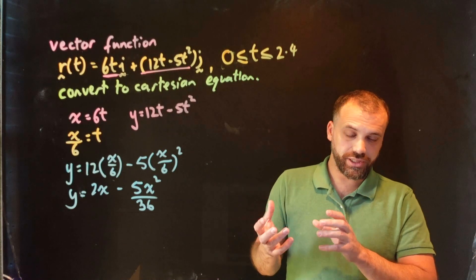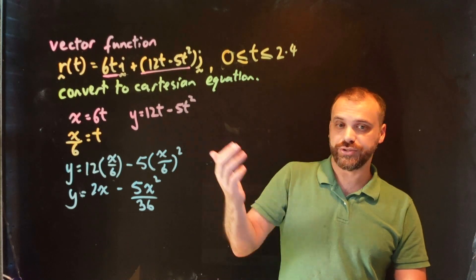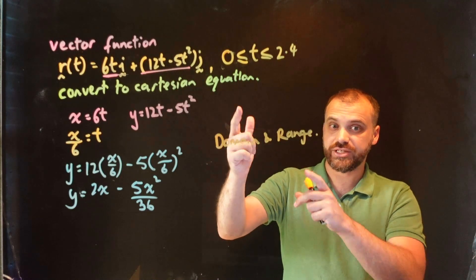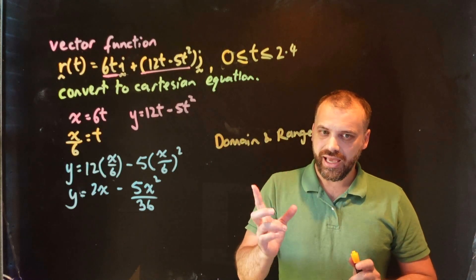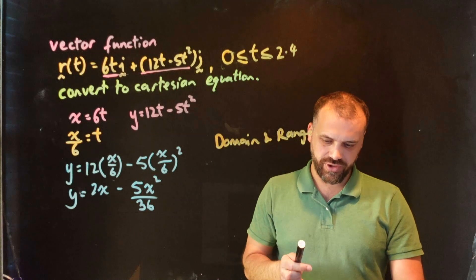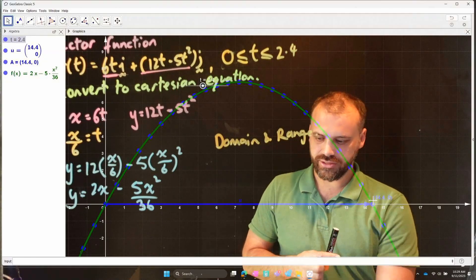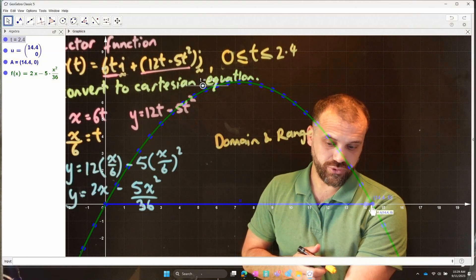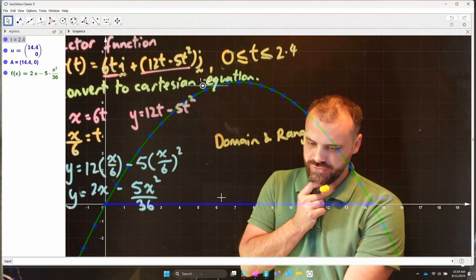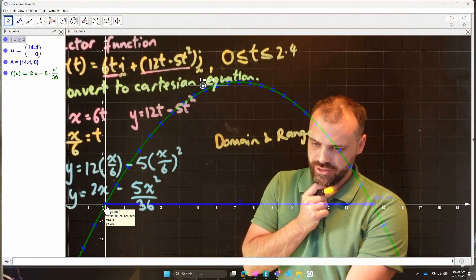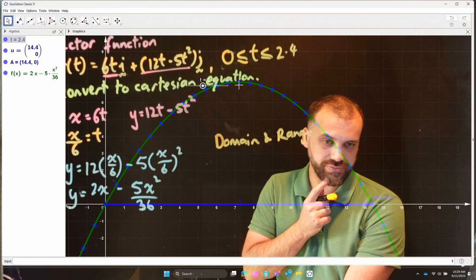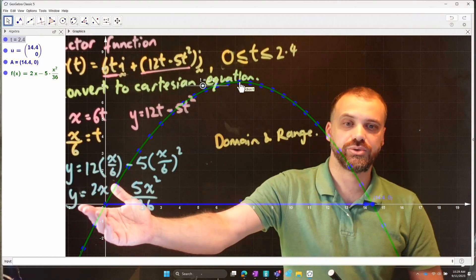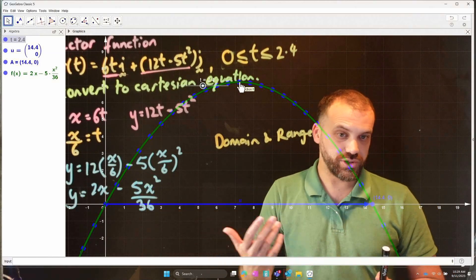And so, another question you might get asked is about the domain and range of this vector function. Alright, so, what is the domain of this vector function as it's currently written? As it's currently written, the domain of this vector function, let's take a look at it, is from this point 0 to this point 14.4. And the range is from 0 up to whatever the highest point of our Cartesian equation. How do you find the highest point? Well, you have a Cartesian equation right here.